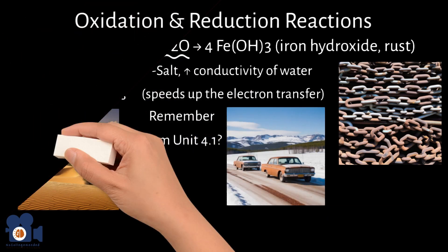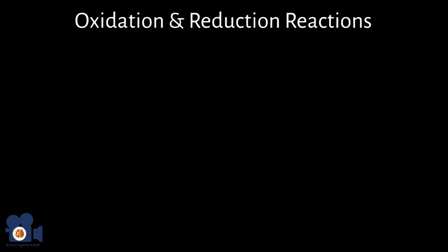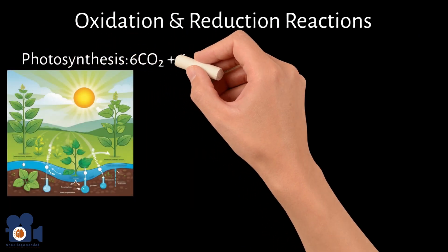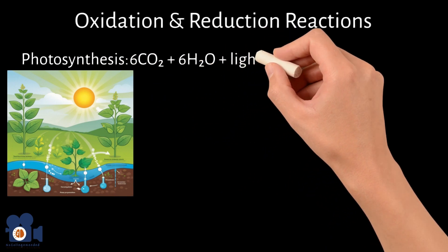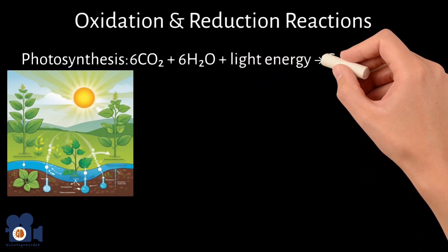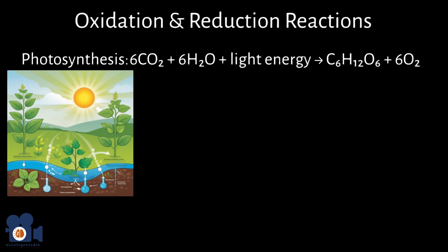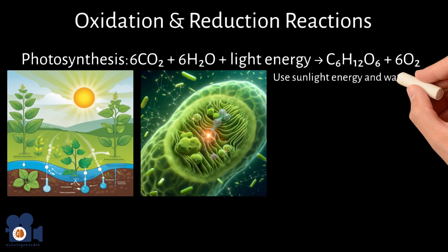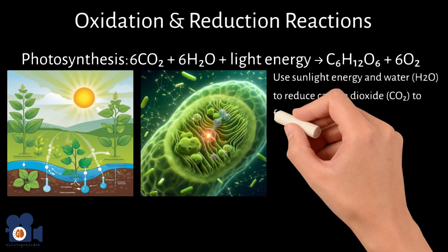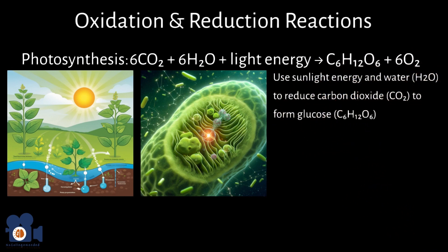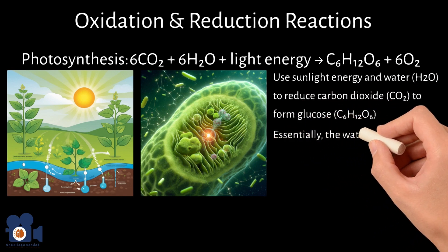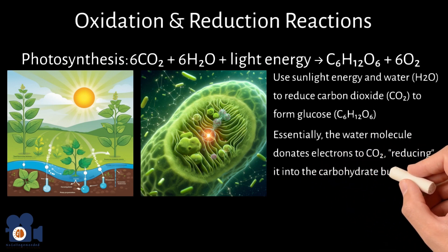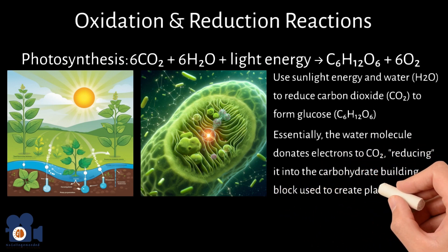Another familiar redox reaction is photosynthesis. This reaction looks like 6CO2 plus 6H2O plus light energy going to C6H12O6 plus 6O2. In it, chloroplasts of plants use sunlight energy and water to reduce carbon dioxide to form glucose, C6H12O6. Essentially, the water molecule H2O donates electrons to CO2, reducing it into the carbohydrate building block used to create plant matter.